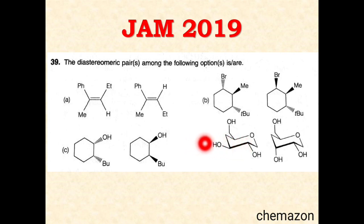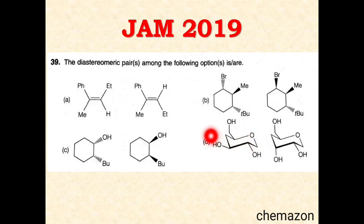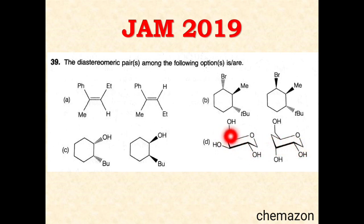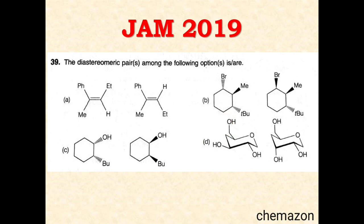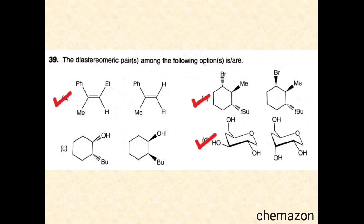In option D, when you compare the two structures it is a cyclohexane-ring-type molecule, except there is an oxygen making it a pyranose-type molecule. The CH₂OH group and the OH group are in the same equatorial positions, while the position of this hydroxyl is changed from equatorial to axial. So these are also a pair of diastereomers. The correct answer is options A, B, and D.